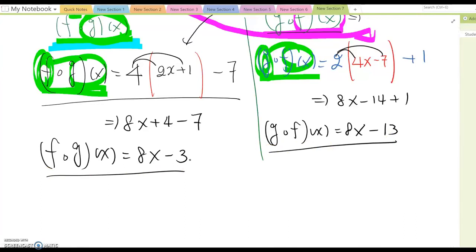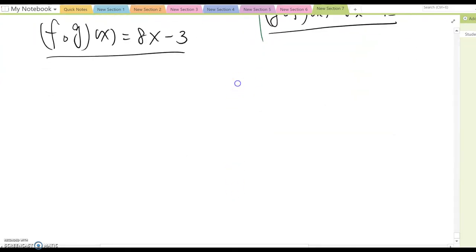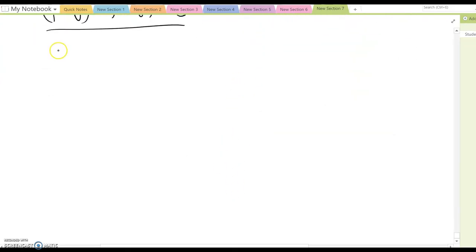So let's look at another example. Given f(x) equal to x square and g(x) equal to square root x minus 3. So we want to find out both f open dot g(x) and g open dot f(x).